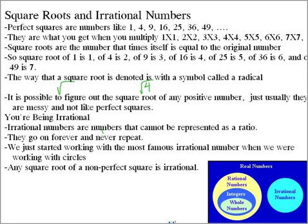Because they're what you get when you multiply 1 times 1, 2 times 2, 3 times 3, 4 times 4, 5 times 5, 6 times 6, 7 times 7, and for 64, 8 times 8.